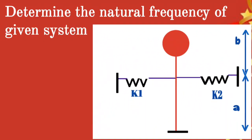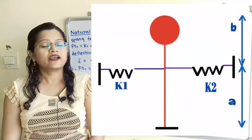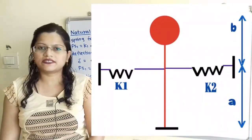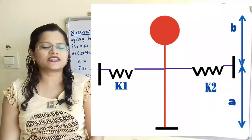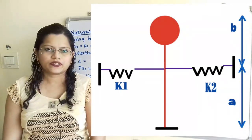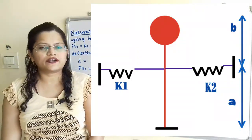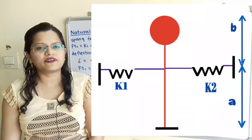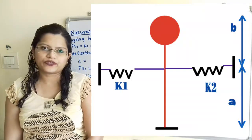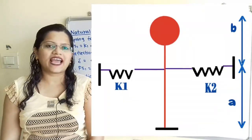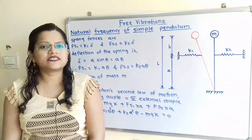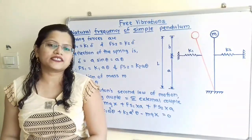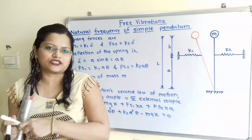Determine the natural frequency of the given system. Let us understand the given system. Mass M is connected through a rod and it is fixed at its lower end. This rod is connected to two springs with stiffness K1 and K2. To find the natural frequency, we will consider the system displaced through a distance X towards the left hand side direction.